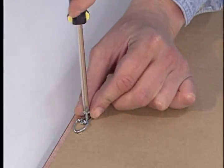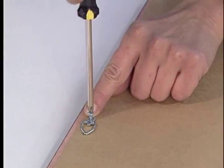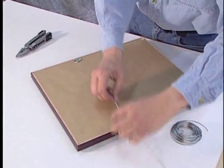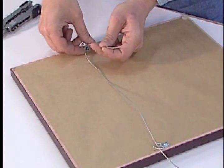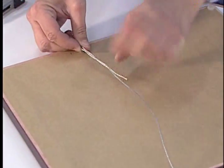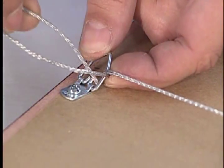Next, attach a ring hanger to each side of the frame at your marked locations. Finally, stretch hanging wire across the back of the artwork from ring hanger to ring hanger. Secure the wire at each end following the pattern shown.